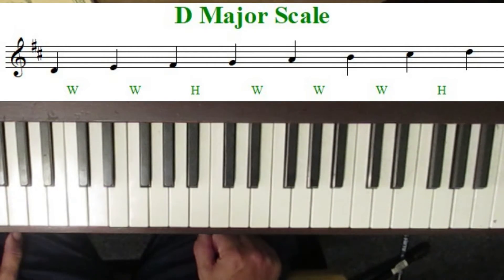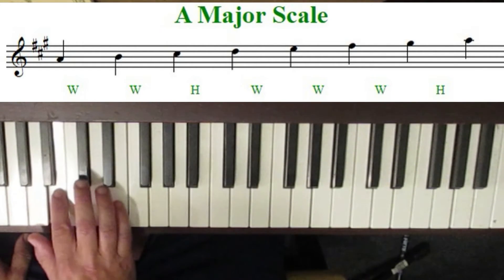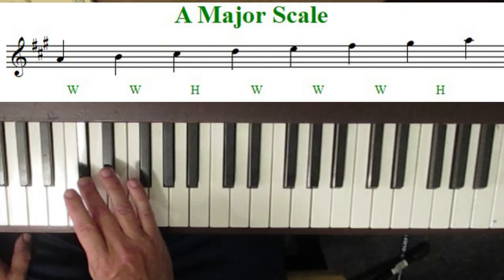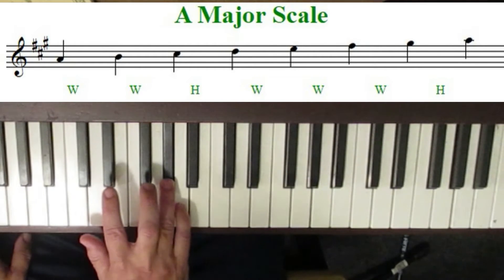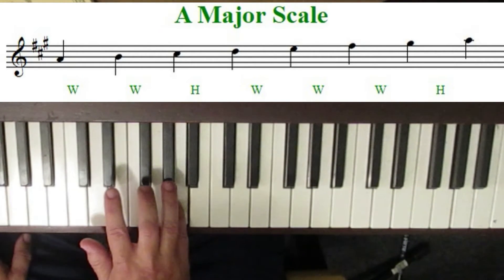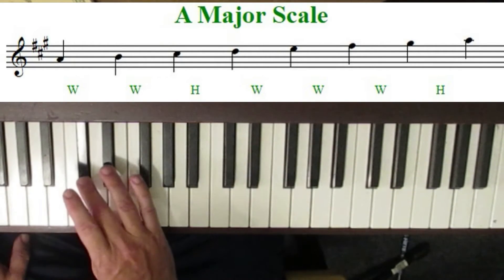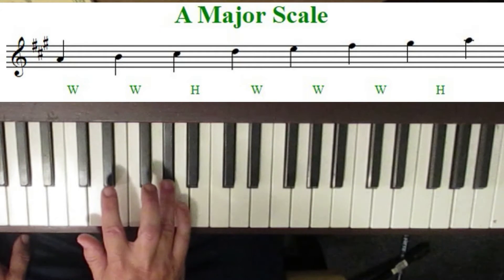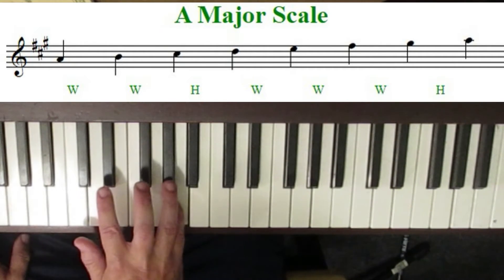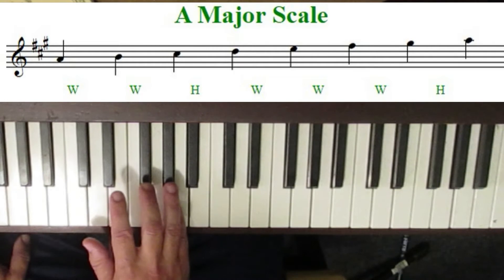Let's move on now to the key of A major. Starting on the note A: whole step to B, whole step to C sharp, half-step to D, whole step to E, whole step to F sharp, whole step to G sharp, rounding it off a half-step back to A. So you'll notice that the key of A has three sharps in it, as reflected by the key signature of the A major scale.